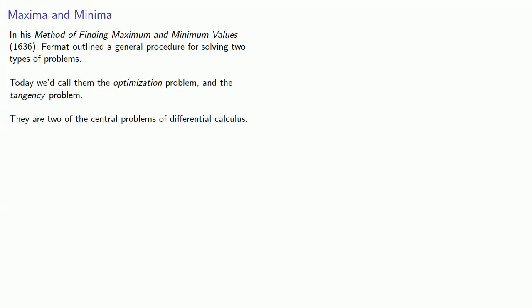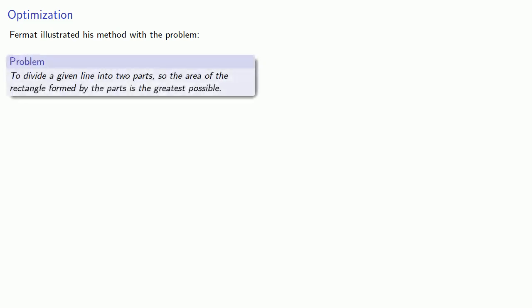They are two of the central problems of differential calculus. Fermat illustrated his method with the problem to divide a given line into two parts, so the area of the rectangle formed by the parts is the greatest possible.